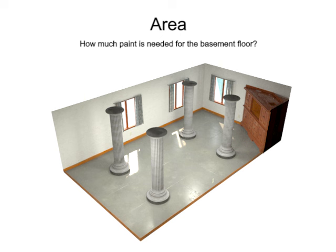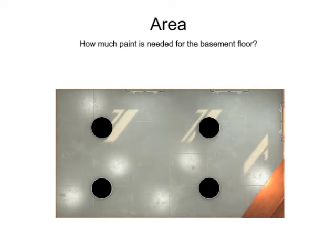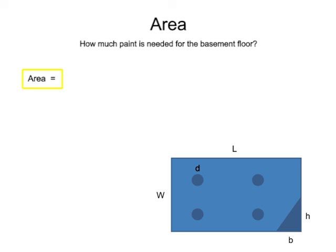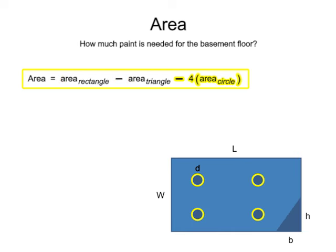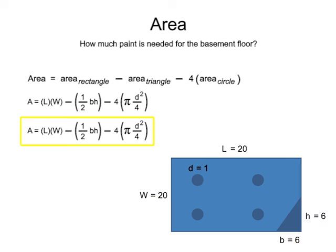A painter was hired to paint the cement floor in a basement. The basement is rectangular in shape but has several large circular posts and a large triangular built-in cabinet. He needs to determine the total square footage he's required to paint so that he can purchase materials. The paint area equals the total area of the rectangular basement minus the triangular built-in and minus the 4 posts. Substituting the formulas for the area of a rectangle, triangle, and circle gives a final equation of length times width, minus one-half base times height, minus 4 times pi times diameter squared divided by 4. The painter measures the appropriate distances, and we can substitute the numbers and solve for the area.